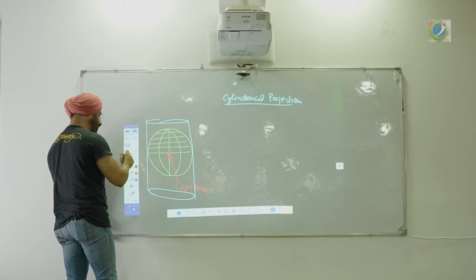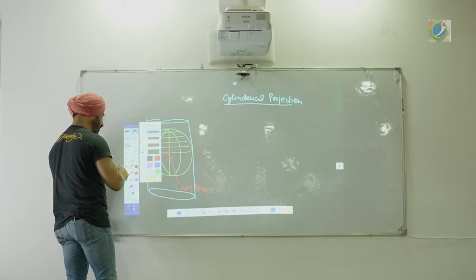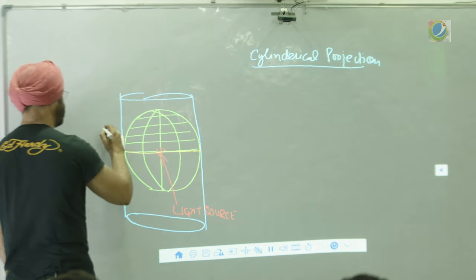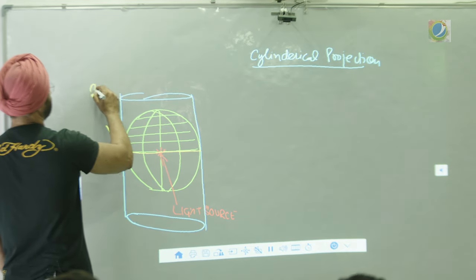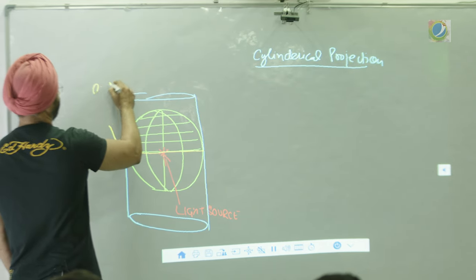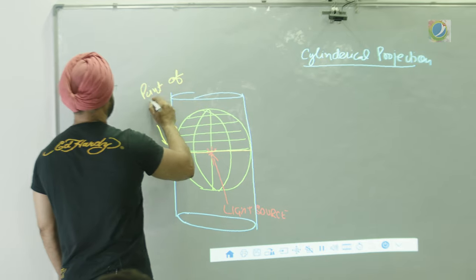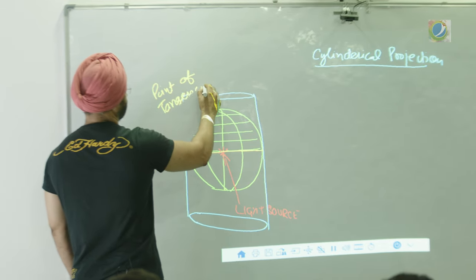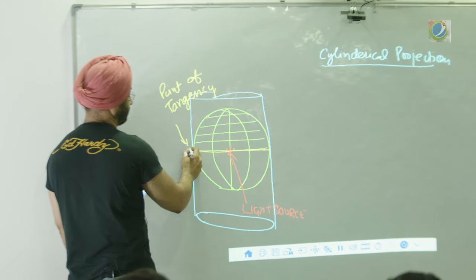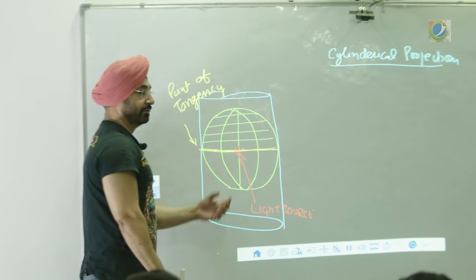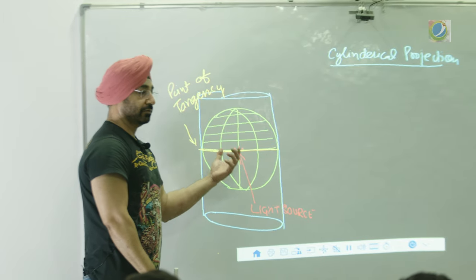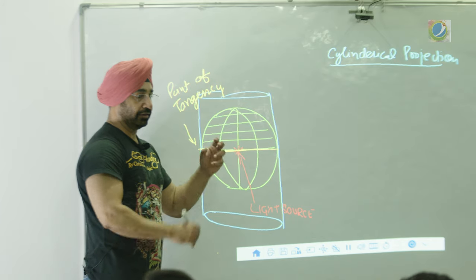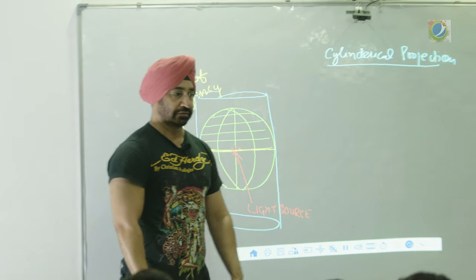Basically the sheet is touching at the equator — this is the point of tangency, that is where the sheet is touching. We draw all the graticules, everything we need, and then we project it.